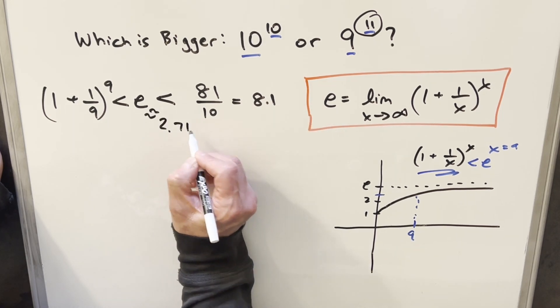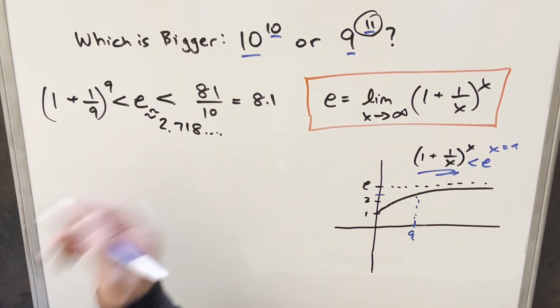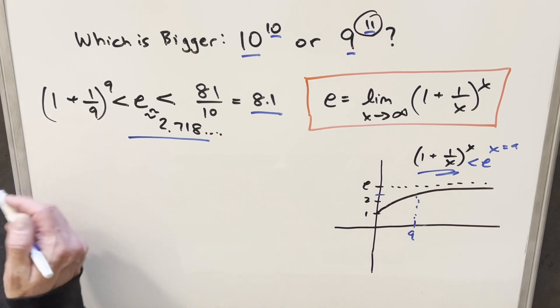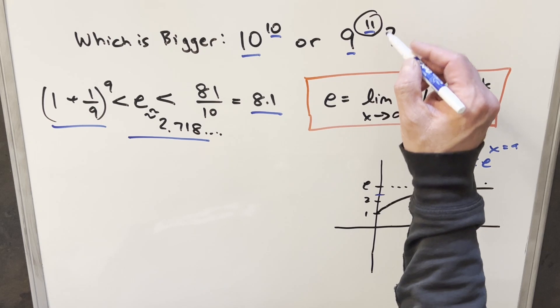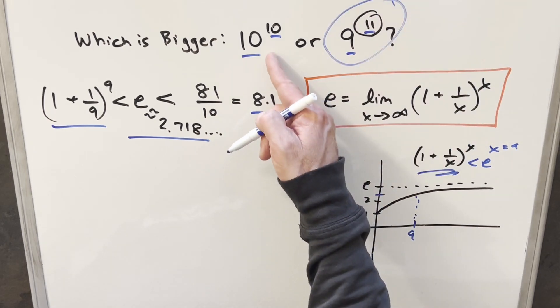Therefore, e is clearly less than 8.1, and we also determined this expression to the left is less than e. So therefore our assumption is true, and 9^11 is greater than 10^10.